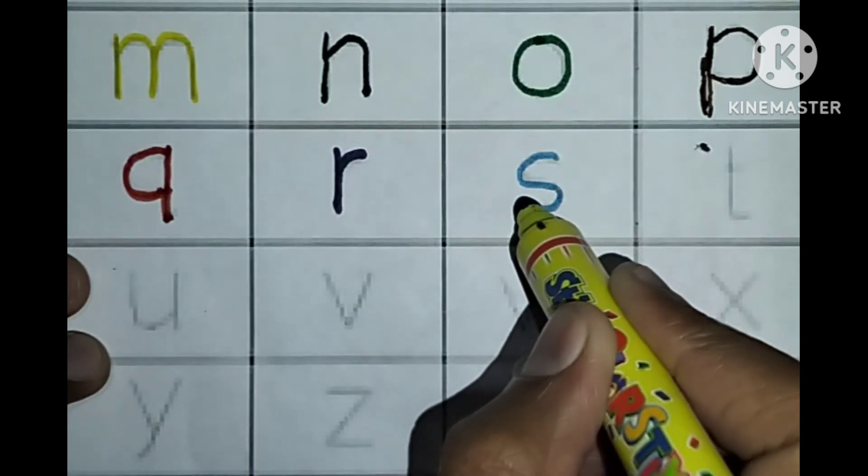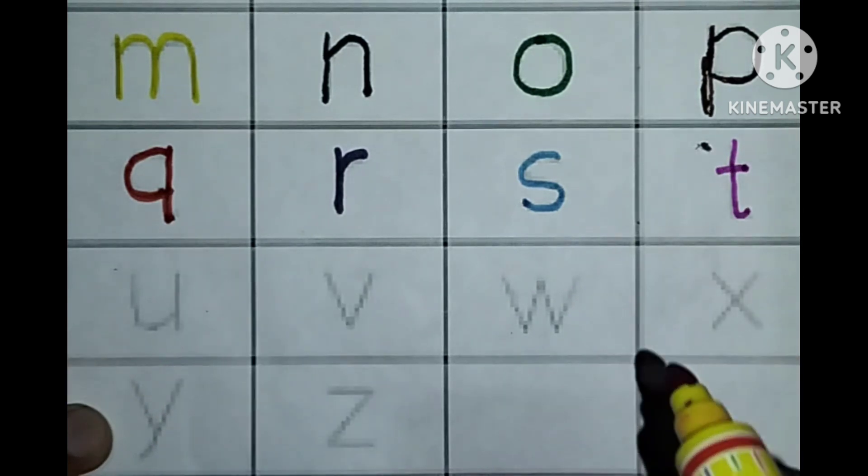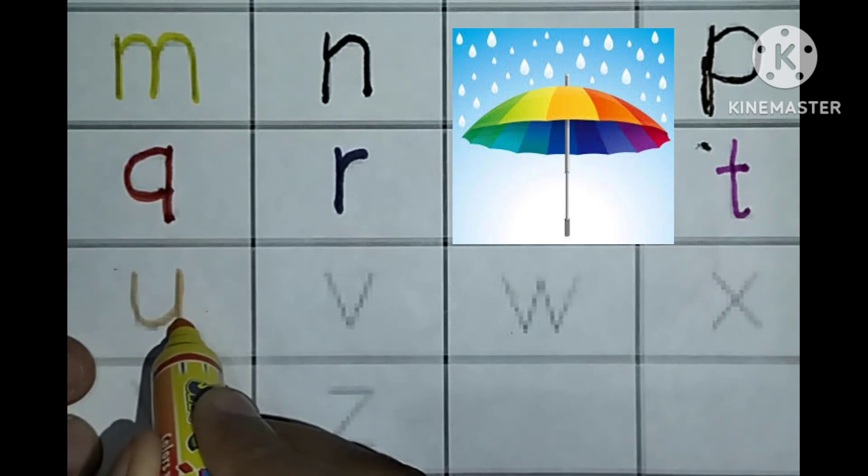S. S for swan. T. T for telephone. U. U for umbrella.